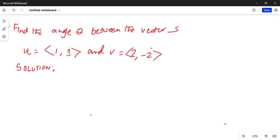Let's find the angle between the vectors written in component form: u is equal to <1, 1> and v is <2, -2>.